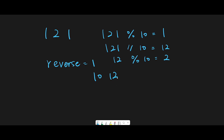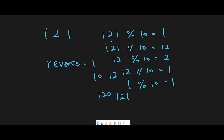We repeat this process for the next digit. We divide 12 by 10 to get 1, then 1 % 10 gives us 1. Before adding that 1 to reverse, we multiply reverse (which is 12) by 10 to get 120, then add 1 to get 121. After finishing the iteration, we have reconstructed 121 from right to left.